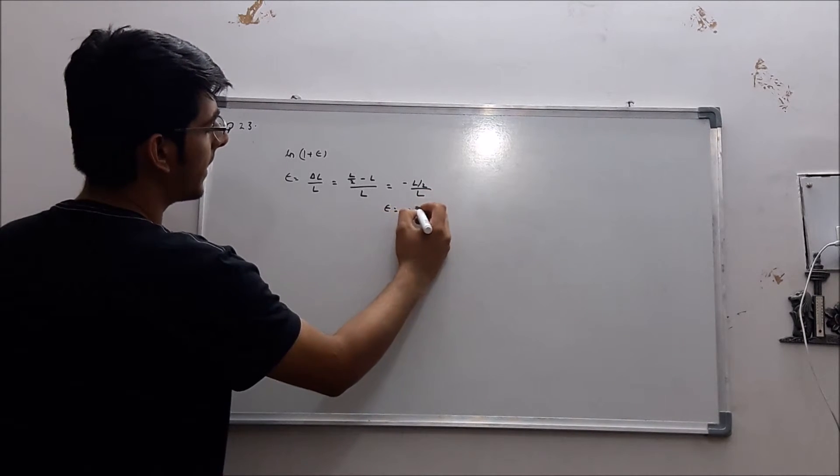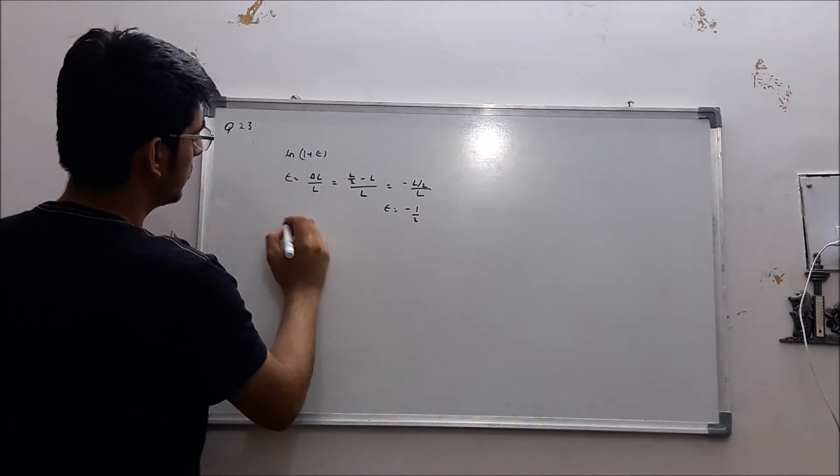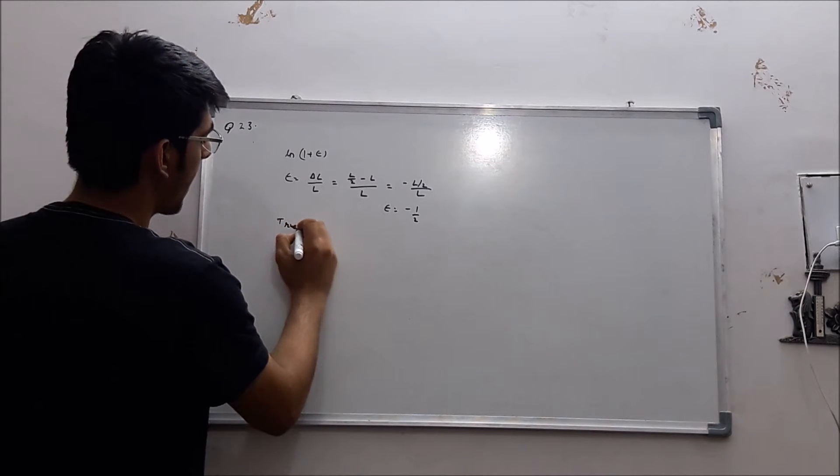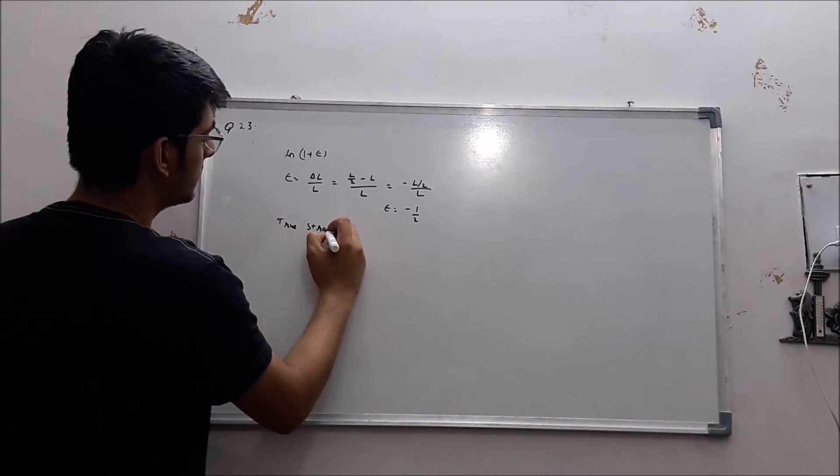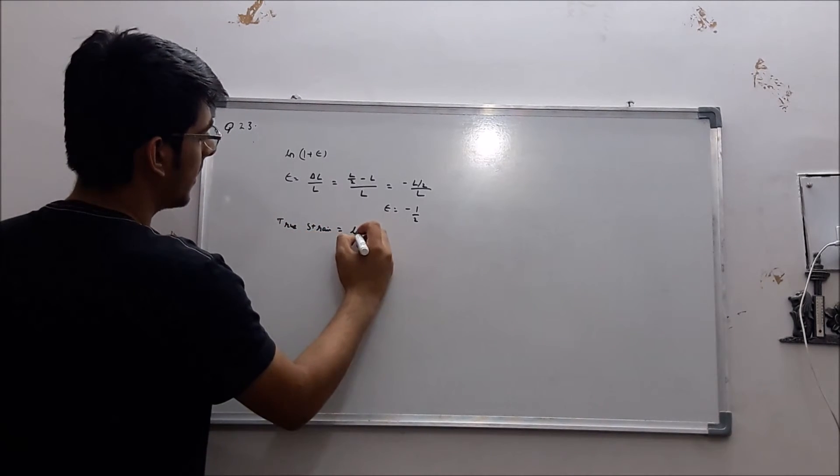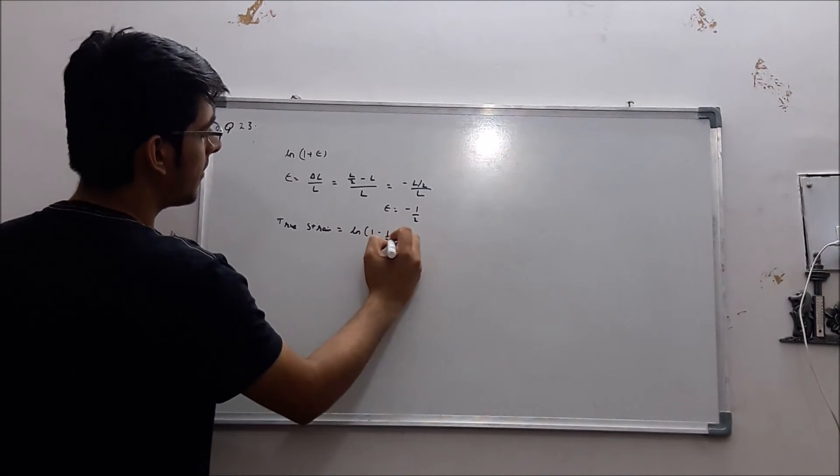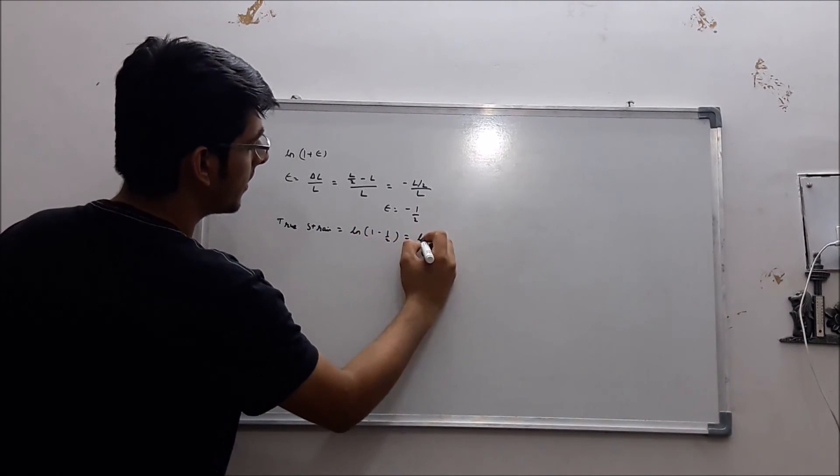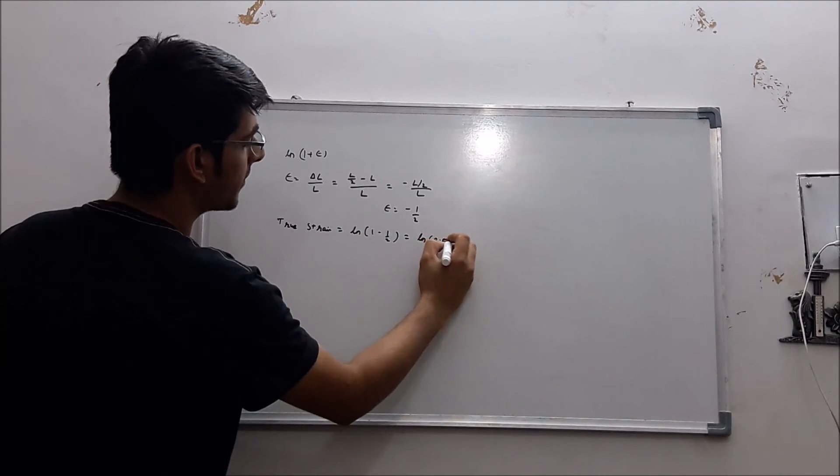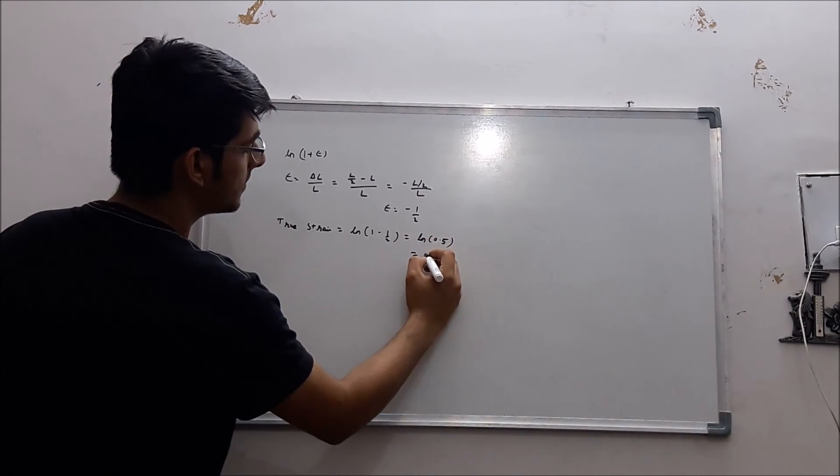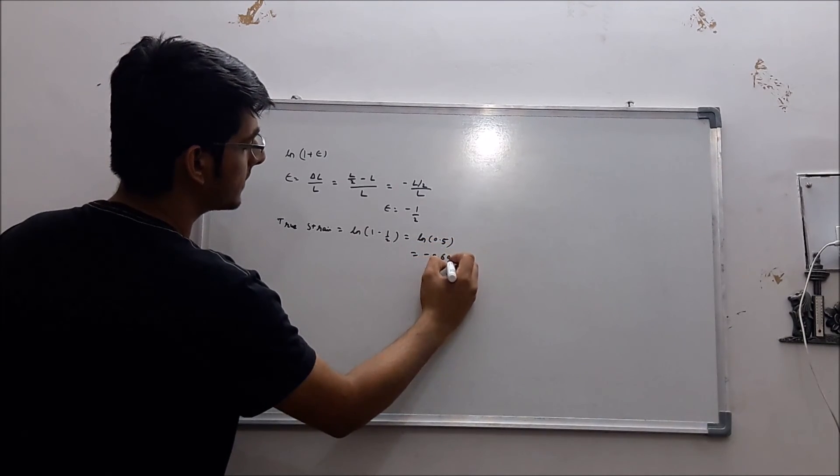So epsilon is minus half. So true strain will be equal to ln(1 minus half) that is equal to natural log of 0.5 which equals minus 0.69. So let's see you in the next one. Bye.